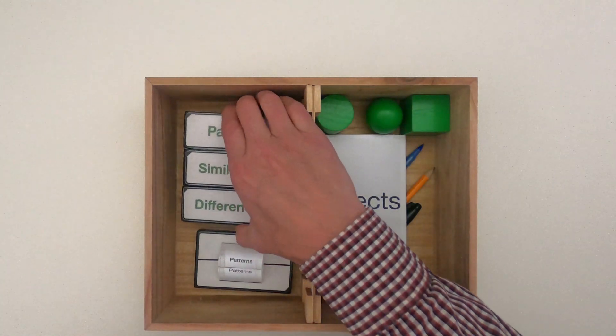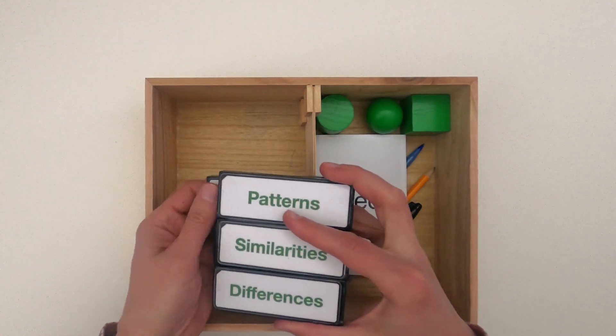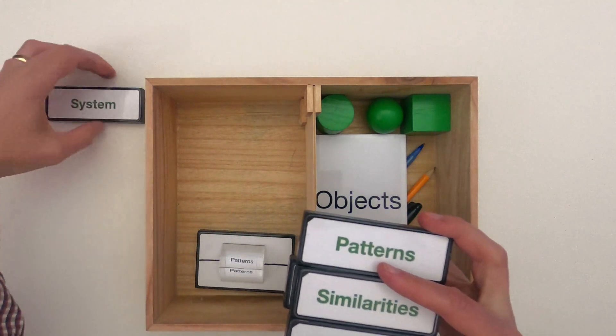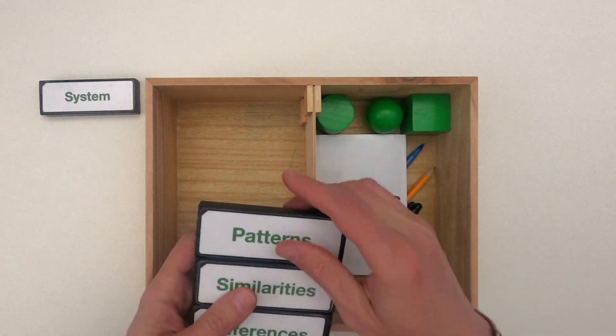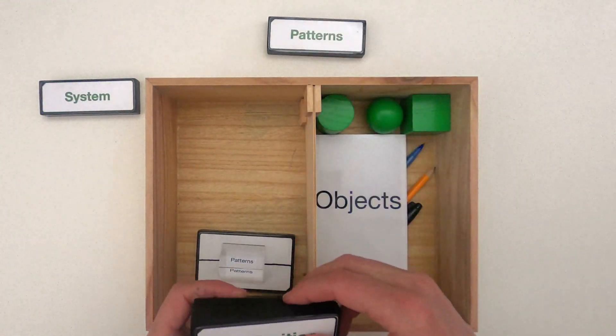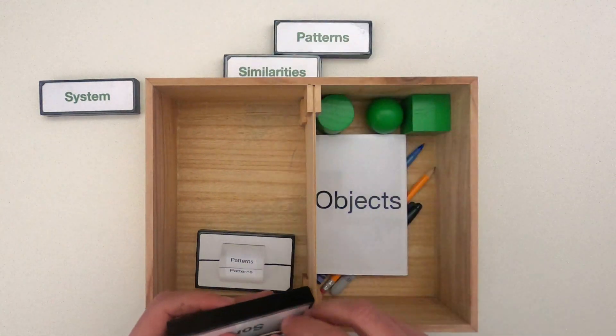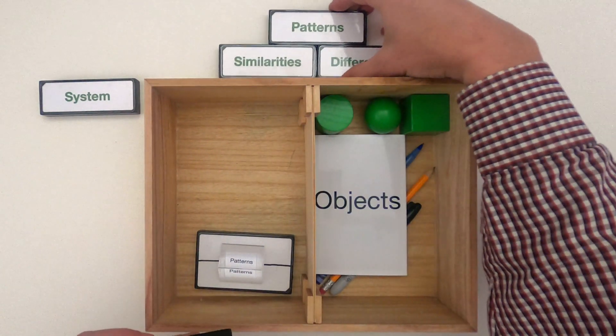When you're looking for patterns you should always start by defining what's the system that we're going to investigate. But once you've done that let's just start looking for patterns. What similarities do we see in the system and then what differences do we see in the system?